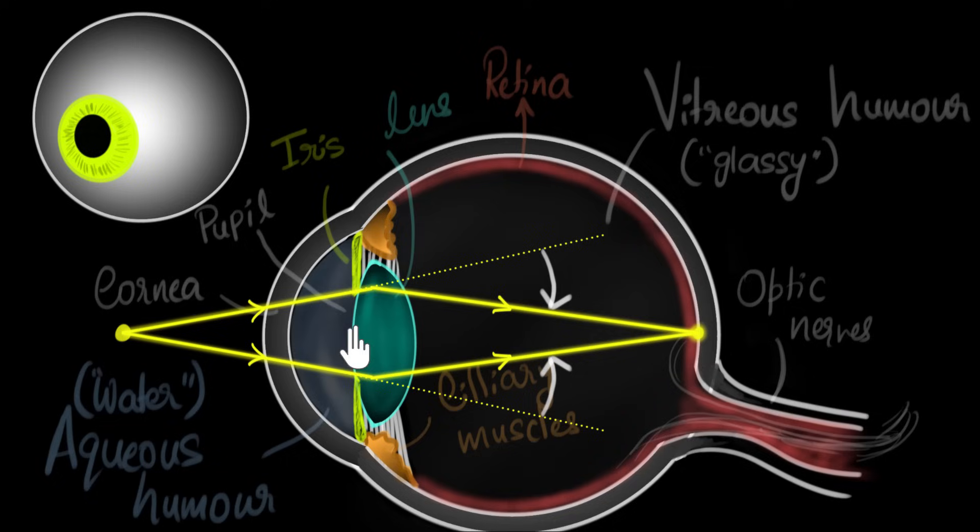But when the objects come closer, since the required power is more, the ciliary muscles will start pushing on this lens to increase its curvature as you can see. Like this. I've exaggerated the figure over here. It will push on the lens, increase the curvature, and as a result, it will increase the optical power.